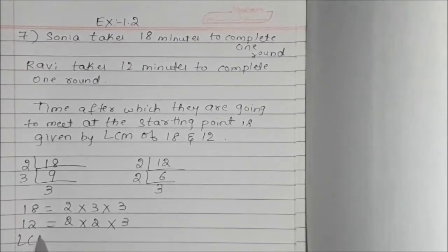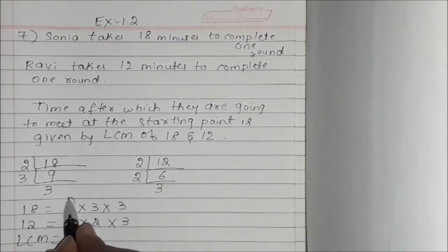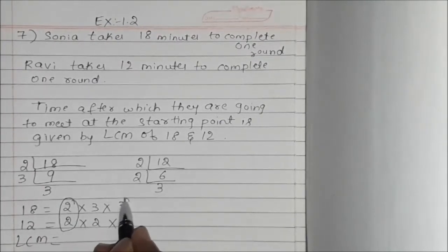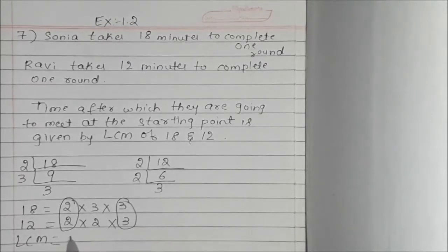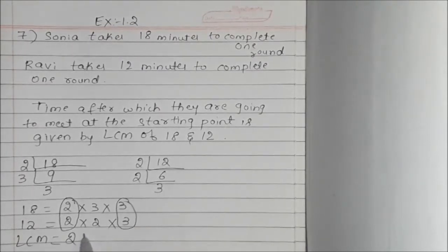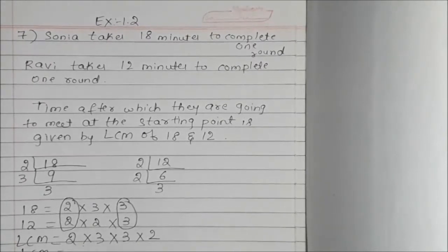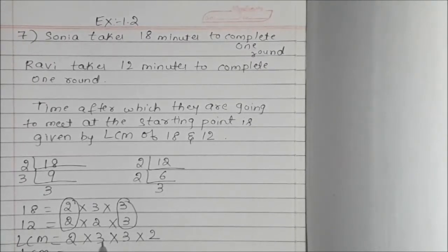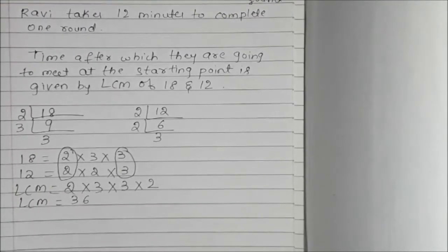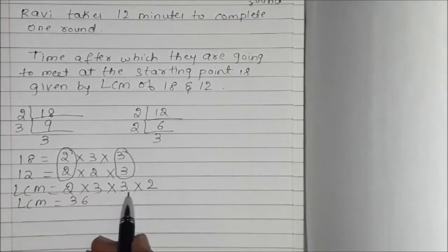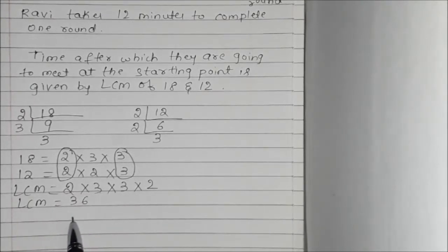Now LCM is equal to, since it has common factors, we will write 2 and 3, and the remaining 3 and 2. So LCM is equal to 2 times 3 is 6, 6 times 3 is 18, 18 times 2 is 36.